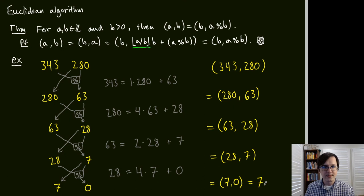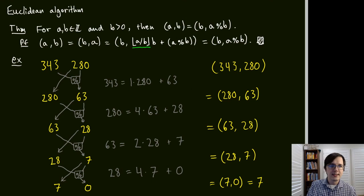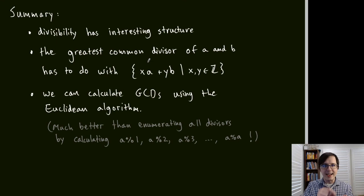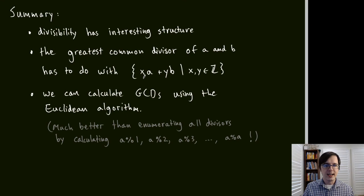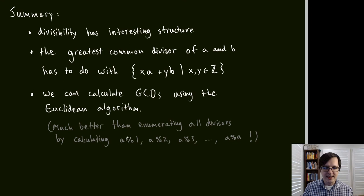To summarize: divisibility has interesting structure as seen from the Hasse diagram. The GCD gives a sense of what two numbers share in that diagram, and is connected to integer linear combinations through Bézout's identity. Using Bézout's identity and the division algorithm, we can calculate GCDs efficiently via the Euclidean algorithm — far better than enumerating divisors.